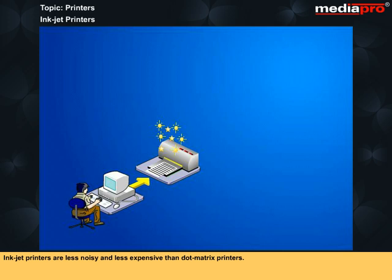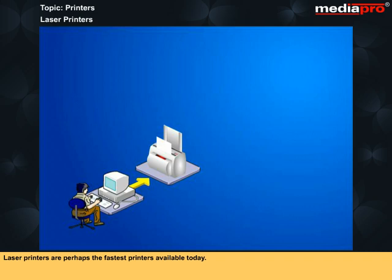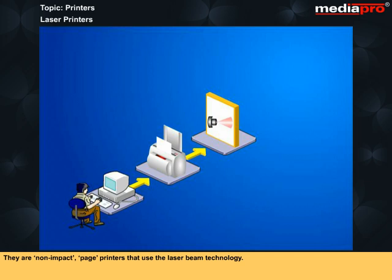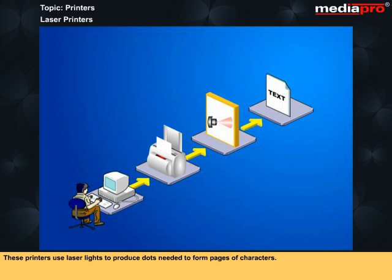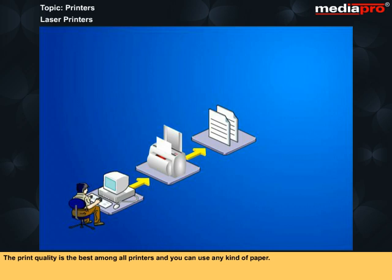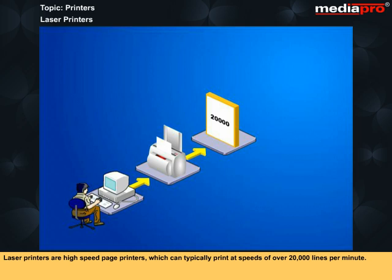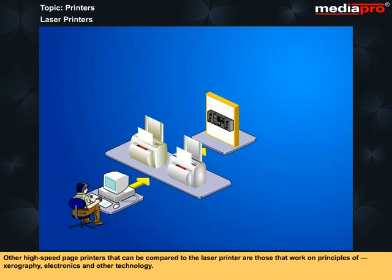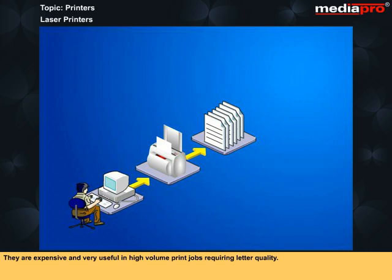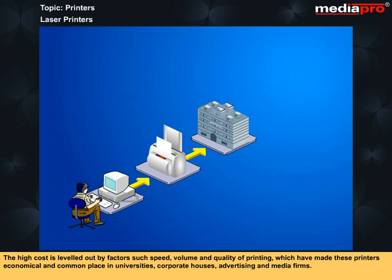Laser printers are perhaps the fastest printers available today. They are non-impact page printers that use the laser beam technology. These printers use laser lights to produce dots needed to form pages of characters. The print quality is the best amongst all printers and you can use any kind of paper. They can be mono-color or multi-color printers. Laser printers are high-speed printers which can typically print at speeds of over 20,000 lines per minute. Other high-speed page printers that can be compared to the laser printer are those that work on principles of xerography, electronics and other technology. They are expensive and very useful in high-volume print jobs requiring letter quality. The high cost is leveled out by factors such as speed, volume and quality of printing which have made these printers economical and commonplace in universities, corporate houses, advertising and media firms.